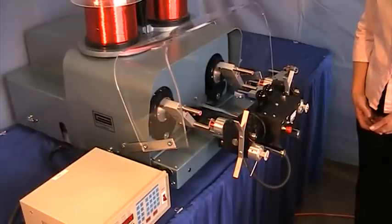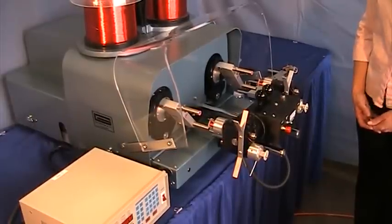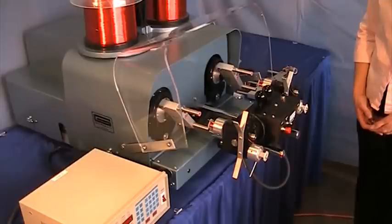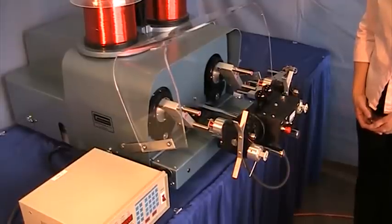Conventional coil winding machines rotate the bobbin, pulling the wire onto the bobbin. The spin winder holds the bobbin stationary and spins the wire onto the bobbin with a pair of fly winding heads.